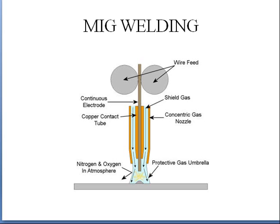MIG welding is metal inert gas welding. Here we use the metal as a rod in order to perform the welding operation. We use the shielding gas, mostly inert gas, to form a protective layer over the welded surface.